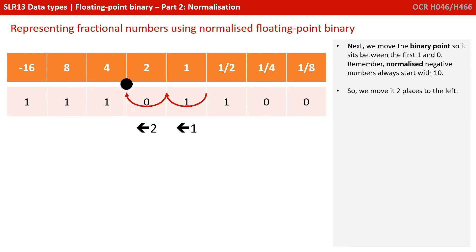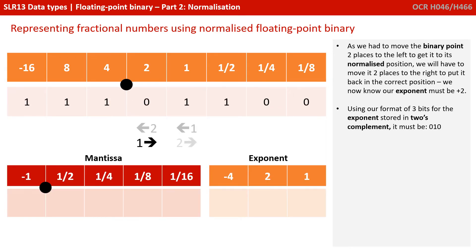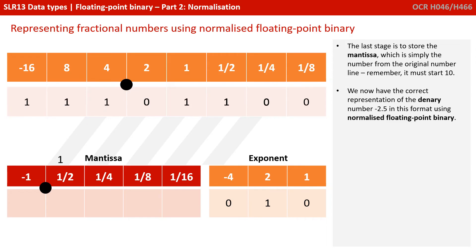So we've got our negative version of 2.5. Next we move the binary point so it sits between the first 1 and 0. Remember, normalised negative numbers start 1, 0. So we moved it two places to the left. As we moved it two places to the left to get to the normalised position, we'll have to move it two places to the right to put it back, so we have an exponent of positive 2. In three-bit two's complement, positive 2 is 0, 1, 0. The last stage is to store the mantissa, remembering it must start 1, 0 because it's negative.